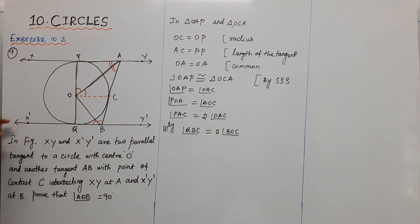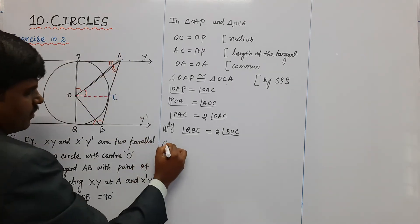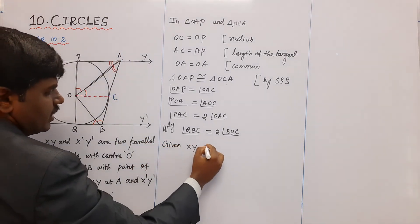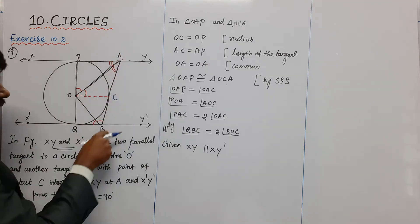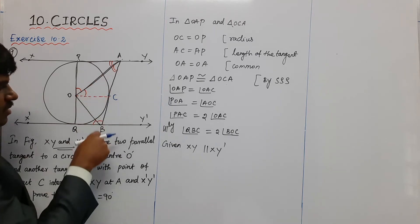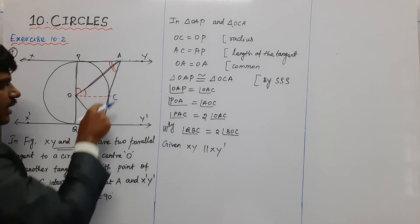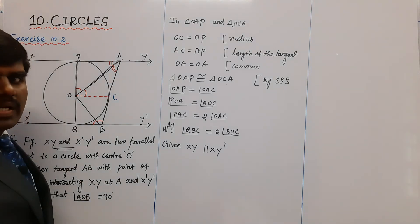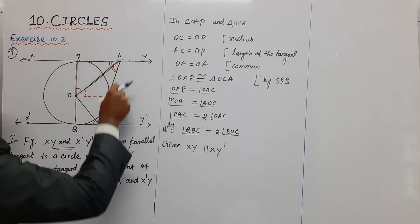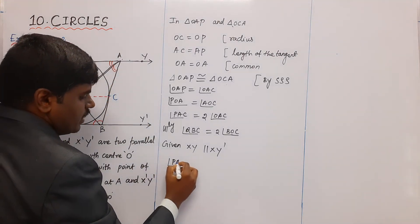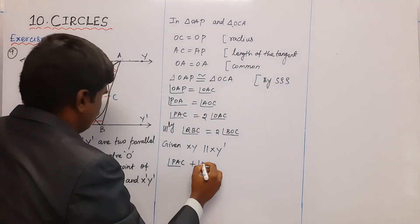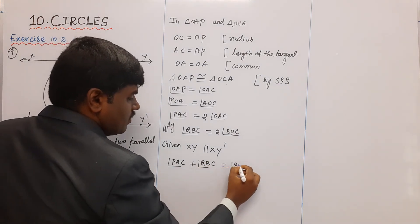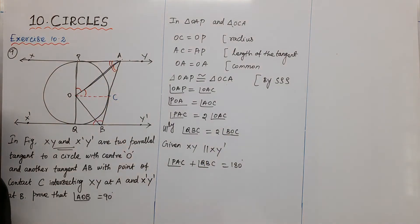Now, from the given conditions, XY is parallel to X'Y', and AB is a transverse line cutting these two parallel lines. Therefore, by the property of parallel lines, the sum of the interior angles — angle BAC plus angle QBC — is equal to 180 degrees.